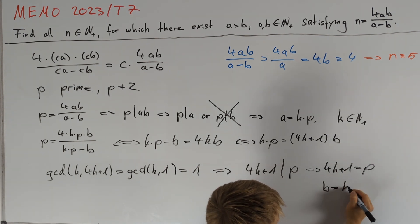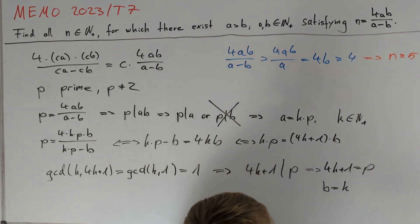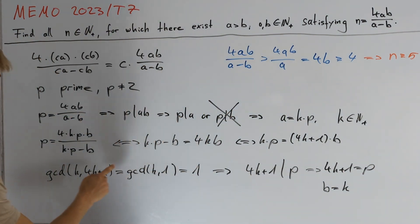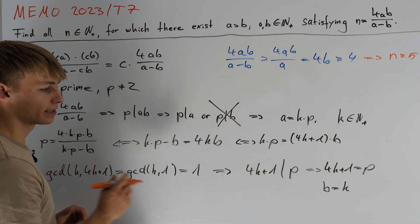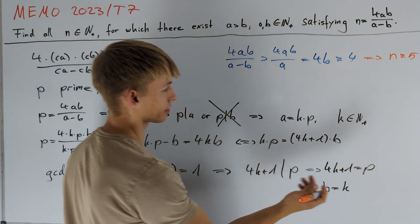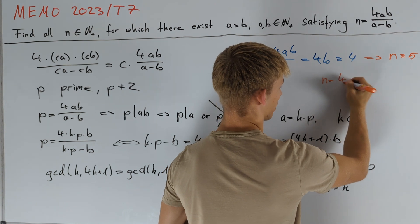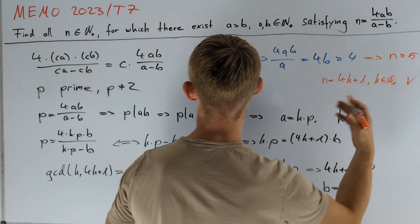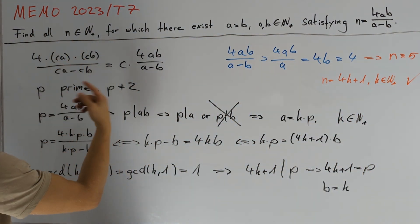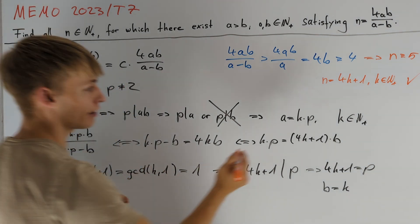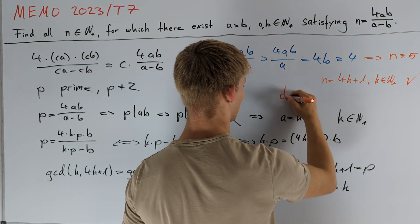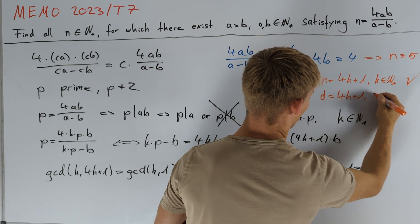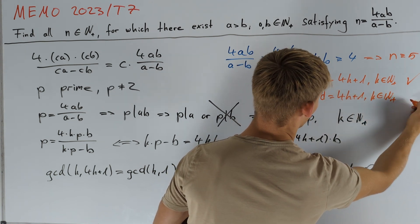Taking b equal to k indeed satisfies this equation, so for a prime p equal to 4k plus 1, we find a and b satisfying the equation. This construction also works for an arbitrary integer n equal to 4k plus 1 where k is a positive integer. Moreover, if we find a divisor d of n satisfying d equals 4k plus 1 with k a positive integer, then n also works, since multiples of solutions are solutions.